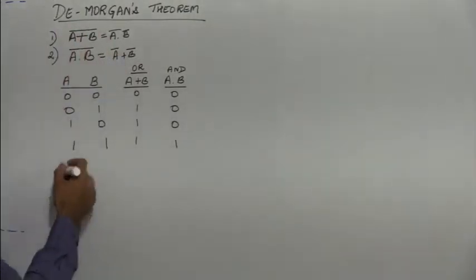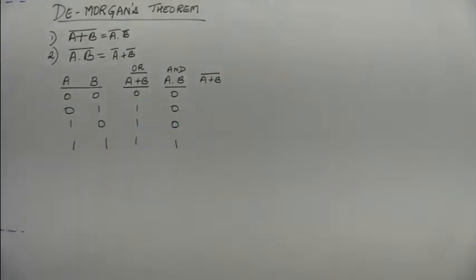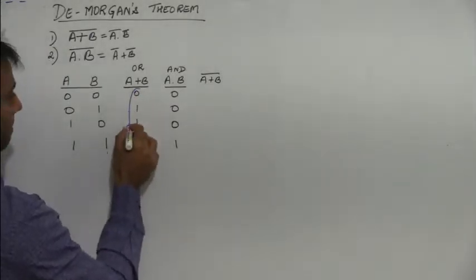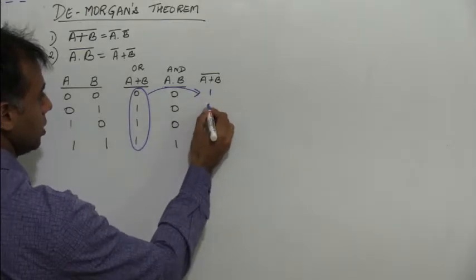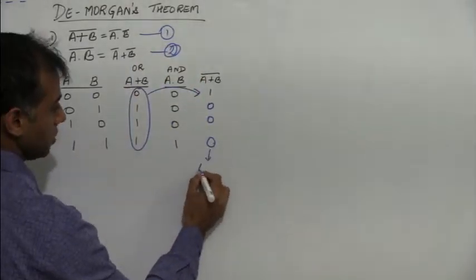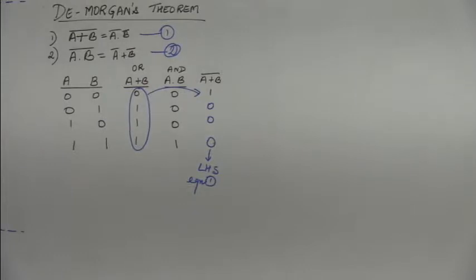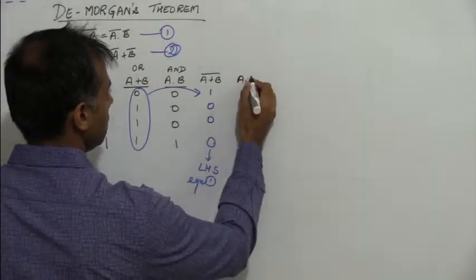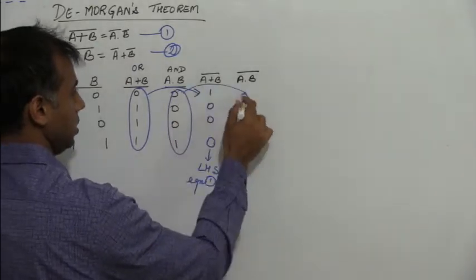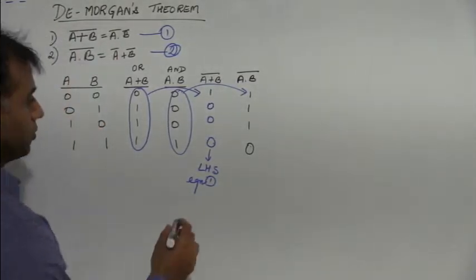We need their complements. We have A plus B whole bar, which is the complement of A plus B. The complement of this is 1, 0, 0, 0 — so if we call this equation 1, this becomes the LHS of equation 1. Similarly, A dot B whole bar is the complement of A dot B, and we get 1, 1, 1, 0. This is the LHS of equation 2.